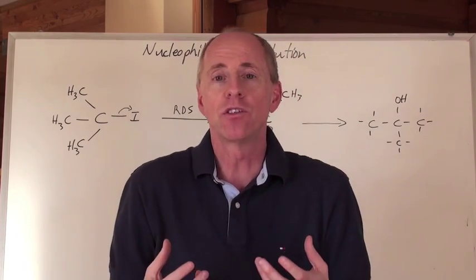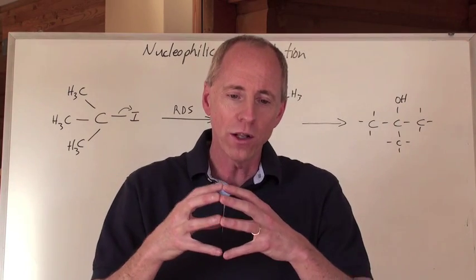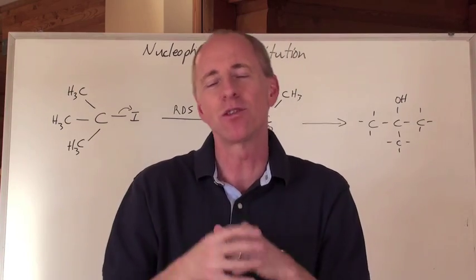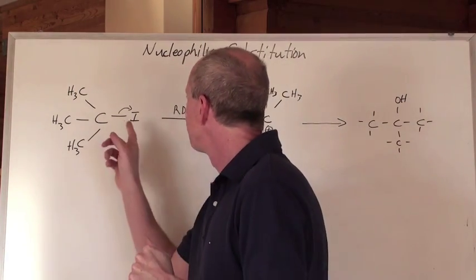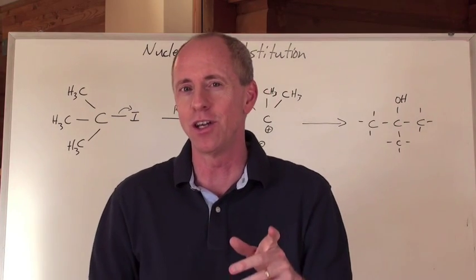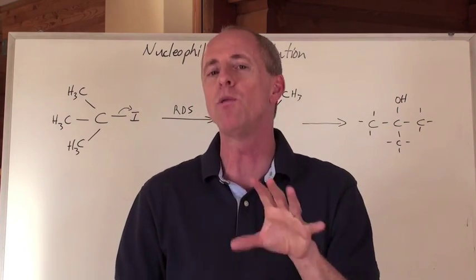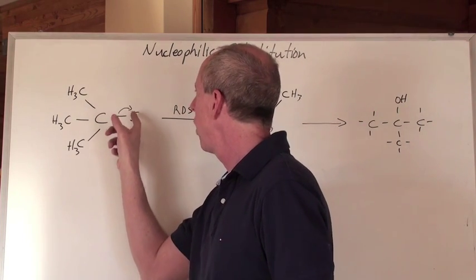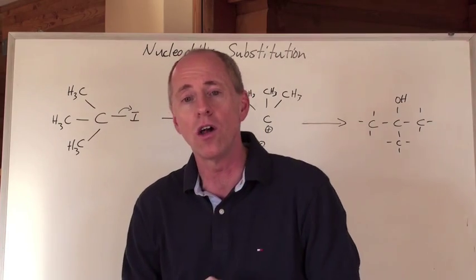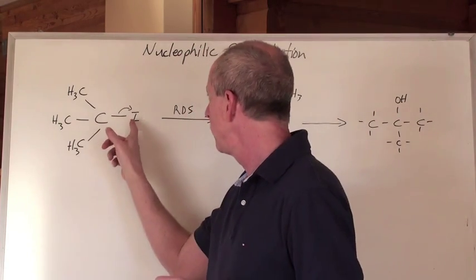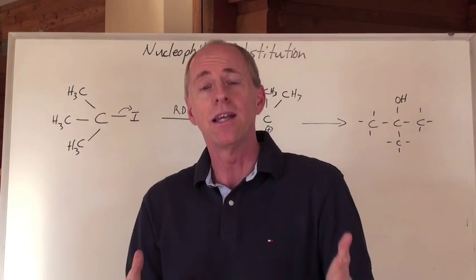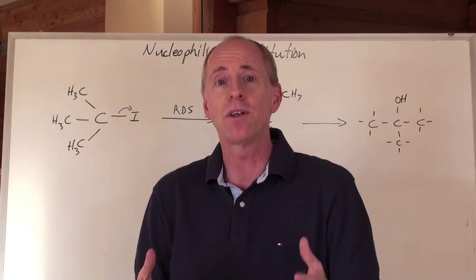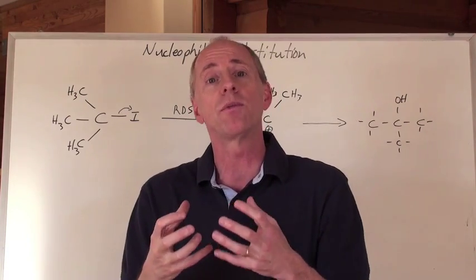When that happens, you're substituting the thing that wants to be attracted - a negative end that wants to be attracted to a positive end. This is called a nucleophile. A nucleophile is something that wants to be attracted to something called an electrophile. An electrophile is something that wants to take electrons or something that's negative.